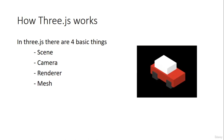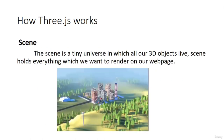Let's understand each of these terms. Scene is a tiny universe in which all our 3D objects live. Basically, scene is going to hold everything which we want to render on our web page. For example, you can see trees, buildings, and so many things — it looks like a forest with a city in the center. These are rendered or created over a canvas element using Three.js. Scene defines a coordinate system called world space.